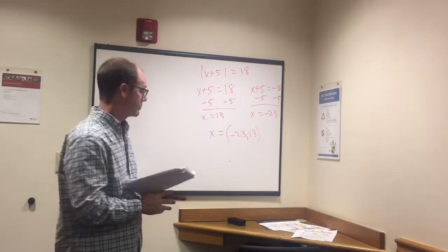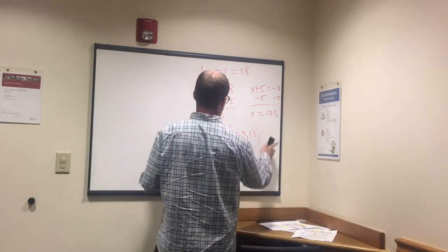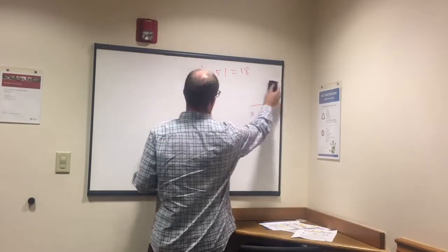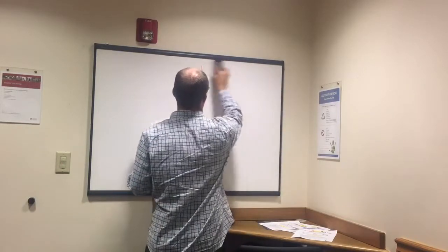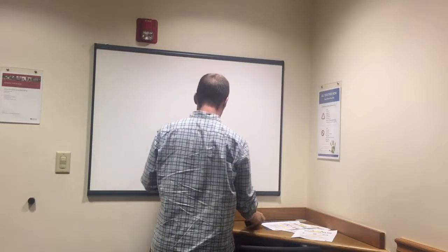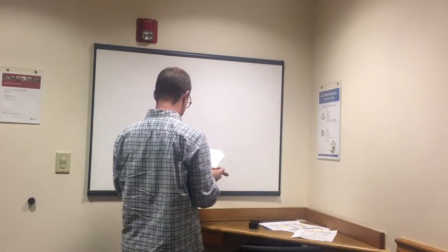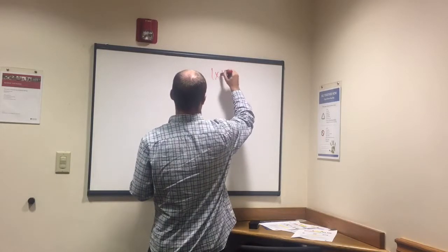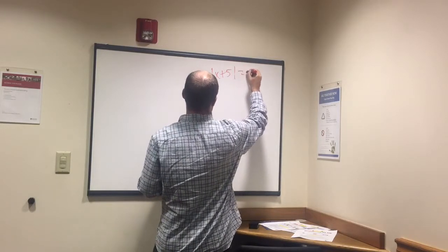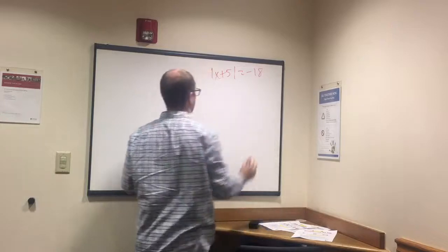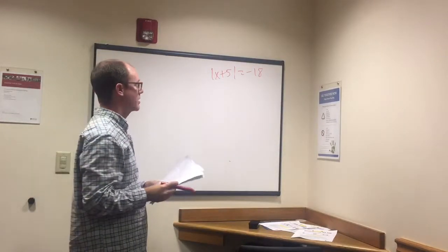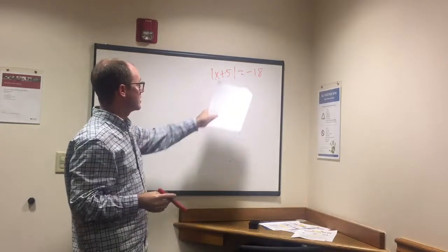One other thing to know for absolute value is that it can't equal a negative number. So if this was the question: absolute value of x plus 5 equals negative 18, any time we have that set up like that, that's an empty set.